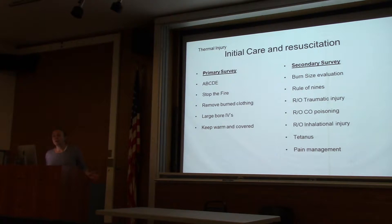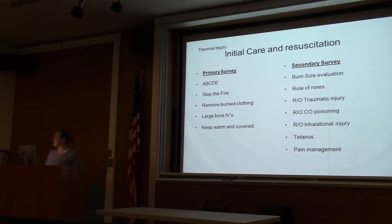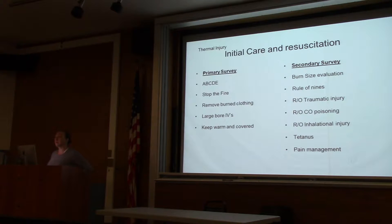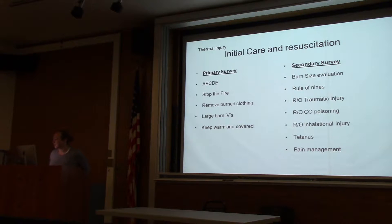On the secondary survey, it's important to get a good estimate of burn size — this is where the rule of nines comes in. You want to rule out traumatic injury and carbon monoxide poisoning. Consider inhalational injury, especially if there's any mechanism for it. Give the patient tetanus. There is no role for prophylactic antibiotics, and then address pain management.